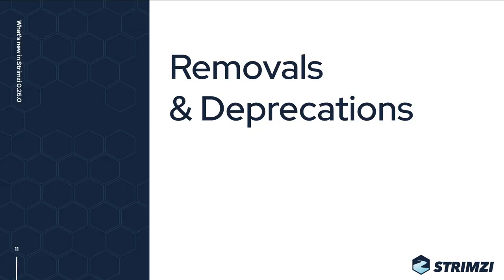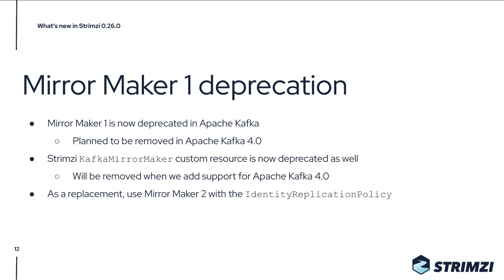There are also some removals and deprecations. Kafka 3.0 deprecates MirrorMaker 1 and it will be removed in Apache Kafka 4.0. Following Kafka's lead, we also deprecate the Kafka MirrorMaker custom resource used to deploy MirrorMaker 1, and will remove it when we add support for Apache Kafka 4.0. As a replacement you can use MirrorMaker 2, and if you want the old behavior of mirroring topics with exactly the same name, you can use the identity replication policy so topic names won't change.